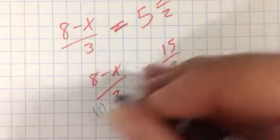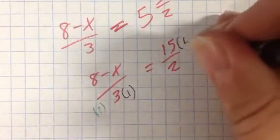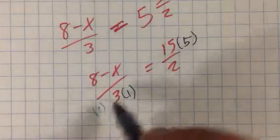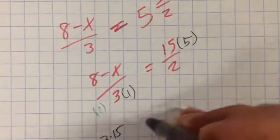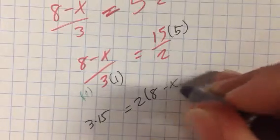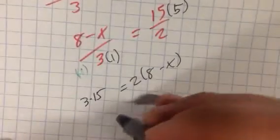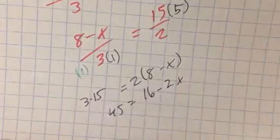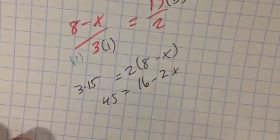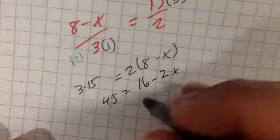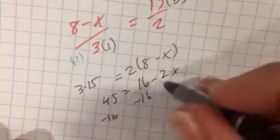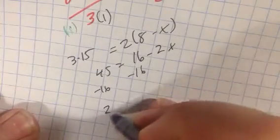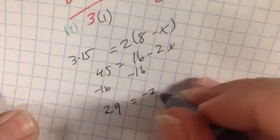Let's do 3 times 15. 3 times 15 equals 2 times 8 minus X. Then it becomes 45 equals 16, 2 times 8 is 16, minus 2X. So, you can subtract 16 from both sides, then you've got 45 minus 16, which is 29. So, 29 equals negative 2X.